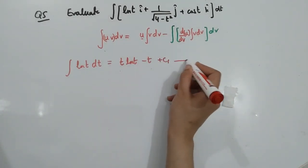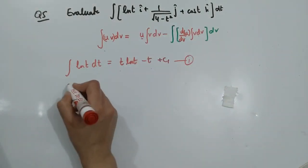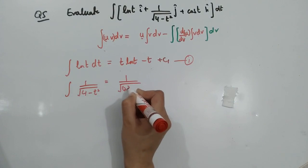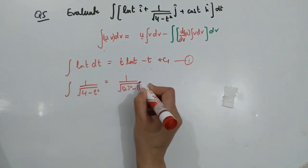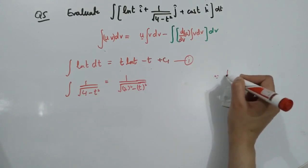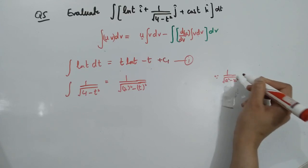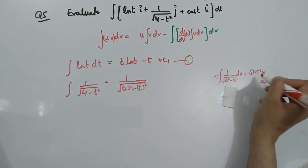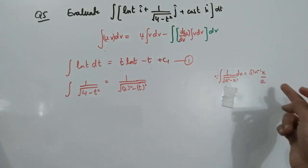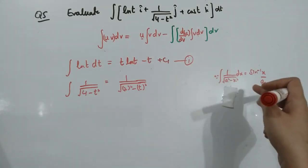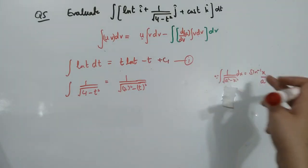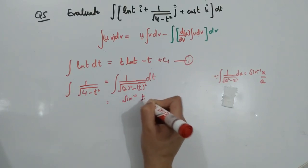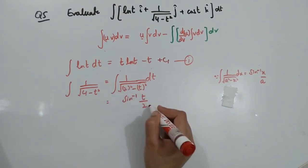Now integrate 1 over square root of (4 minus t squared). This can be written as 1 over square root of (2 squared minus t squared), which matches the standard form 1 over square root of (a squared minus x squared), whose integration is sin inverse(x/a). So the integration is sin inverse(t/2) plus c2. This is the second expression.